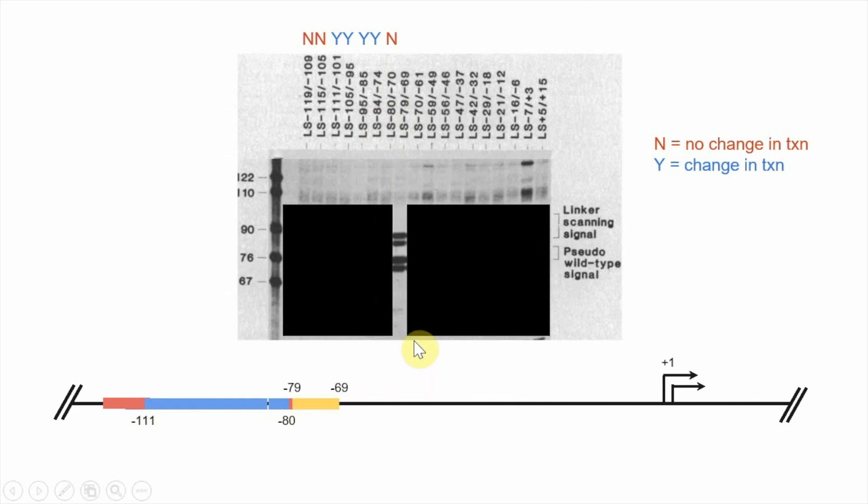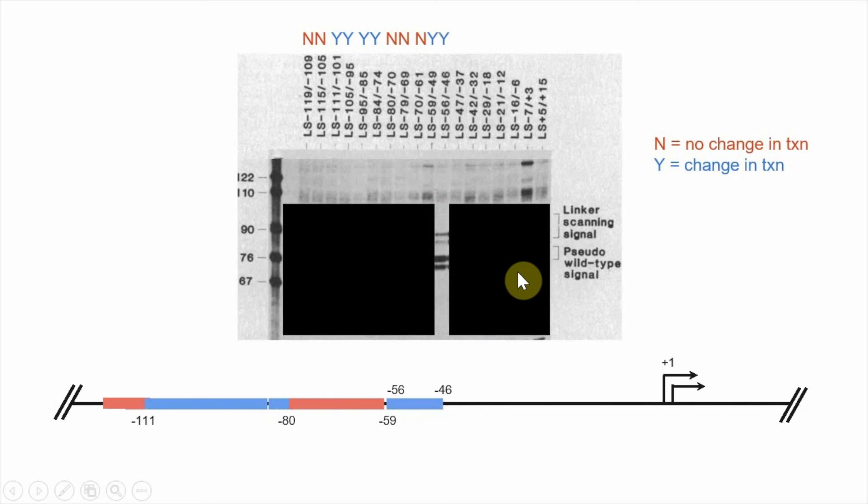Now moving along this gel, we have no change in transcription between minus 79 and minus 69. No change here as well. And now we have a change again. This looks about three or four-fold stronger than the linker scan signals. Here we have quite diminished transcription. And here we are back to full transcription in the linker scanning signal, so we probably have an element somewhere between minus 59 and minus 47. And this minus 47 to minus 37 box is going to get a sign of no. Here there's no difference.